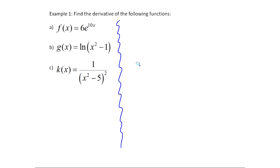Example A is a classic chain rule problem: f(x) = 6e^(10x). When I look at f prime, the first thing I do is ignore the 6 — it can come out of the derivative — and focus on e^(10x). That's not e^x, obviously. We have a rule: the derivative of e^x is e^x. What the chain rule says is you can pretend that 10x is something else, but you're going to have to pay for it — you have to multiply by its derivative.